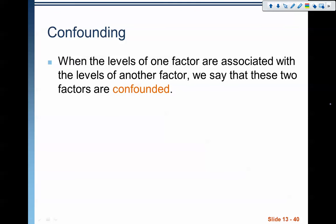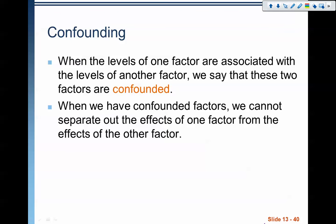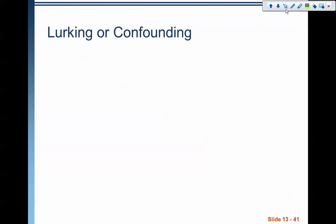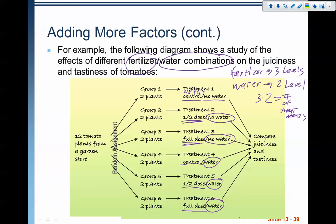Finally, confounding variables: when the levels of one factor are associated with the levels of another factor, we say the two factors are confounded. When factors are confounded, we can't separate the effects of one from the other, making the experiment essentially useless. For example, in the tomato experiment, if having a half dose of fertilizer were somehow related to not having water, we wouldn't know whether it was the fertilizer or the lack of water causing the result. We have to be careful in our design to ensure levels aren't affecting each other so we can separate the effects.